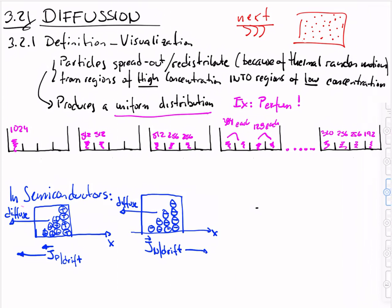In semiconductors, when we have a high concentration of carriers, they will experience this diffusion process. On the left-hand side we have holes — these holes will diffuse to the left. In the other box you can see electrons; they will also diffuse to the left because they are concentrated as shown in the picture.